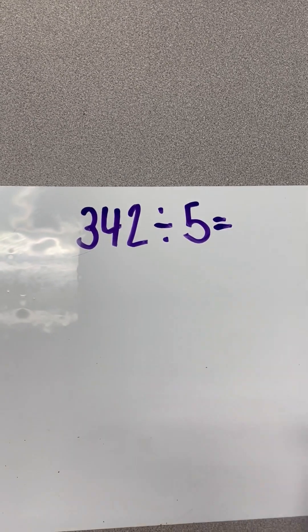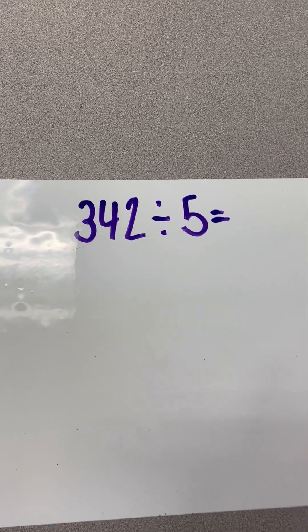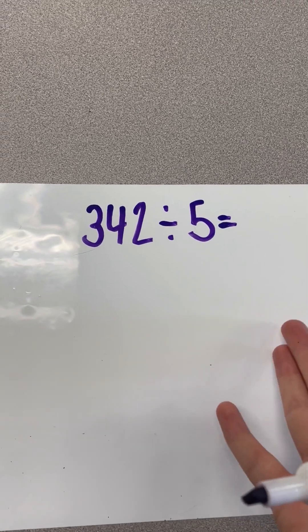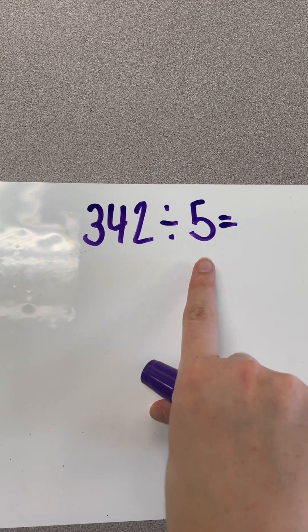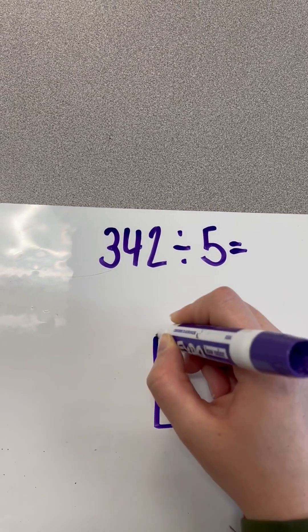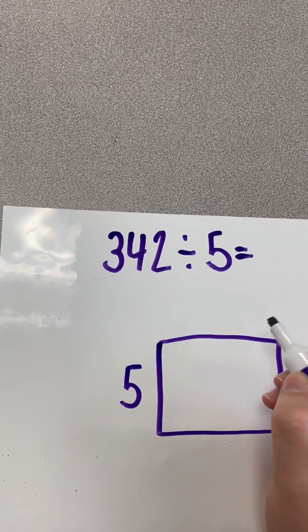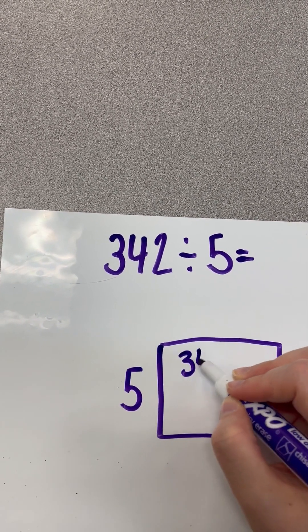When I say remainder, we're just talking about that leftover that cannot be part of a complete group. In this case, it would be a complete group of 5. So, we're going to go ahead and draw our area model. We know my divisor is 5. It's that number trying to get into our dividend, which is 342.